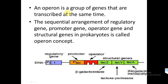An operon is a group of genes that are transcribed at the same time. The sequential arrangement of a regulatory gene, promoter gene, operator gene, and structural genes in prokaryotes is called the operon concept. These genes are present one after another, and because of this sequential arrangement, their complete set is called an operon.